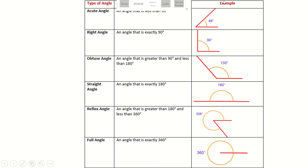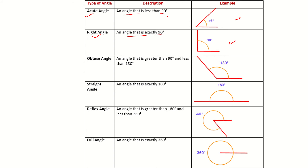Let us talk about different types of angles. First is the acute angle — any angle that measures less than 90 degrees is known as an acute angle. For example, 46 degrees is an acute angle. Next is the right angle, which measures exactly 90 degrees. An obtuse angle is an angle greater than 90 degrees but less than 180 degrees.